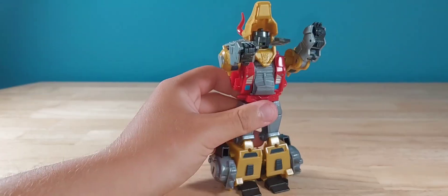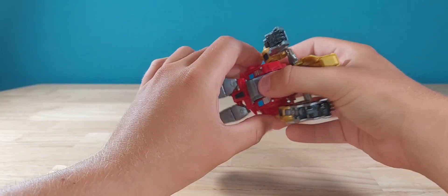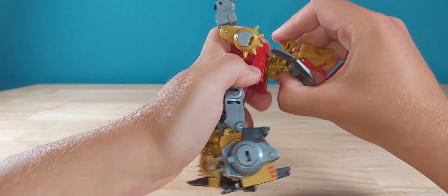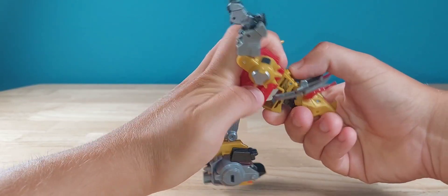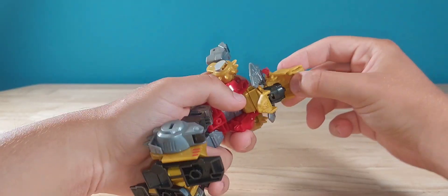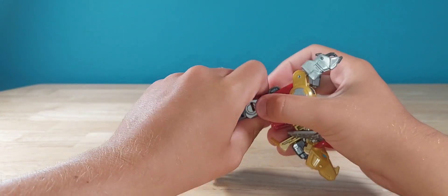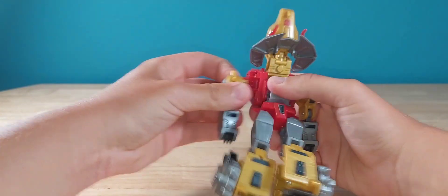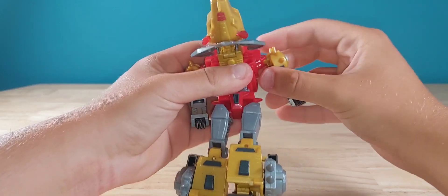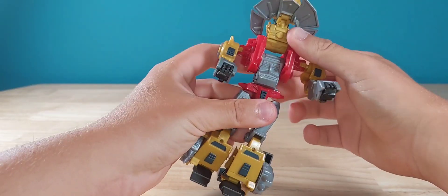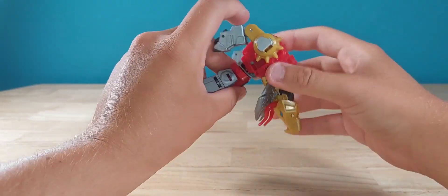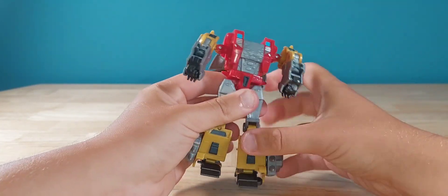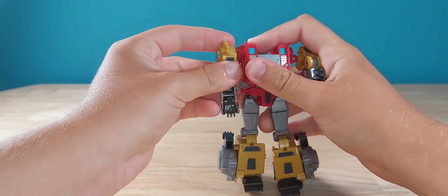Now for the upper half. Go ahead and untab this section, rotate it 180. Then you want to take this, lift it up, rotate that around 180. Get the arms on double hinges out of the way.